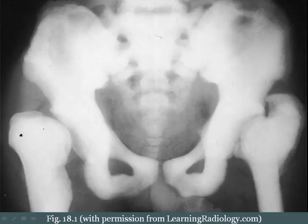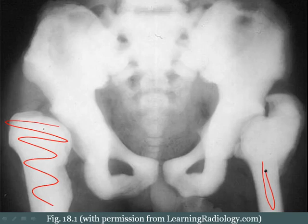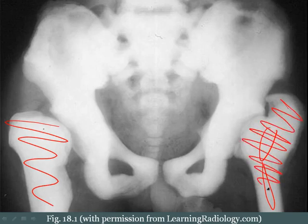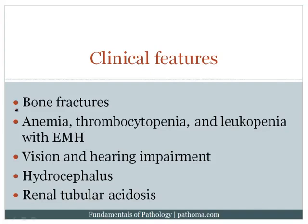On x-ray, osteopetrosis shows super thick bone. Normally you should see a dark space where the medulla would be, but instead you see completely thickened bone. This image is particularly high yield. The clinical features include bone fracture, because although the bone is thick, it is weak due to the lack of proper balance between osteoclast and osteoblast activity.